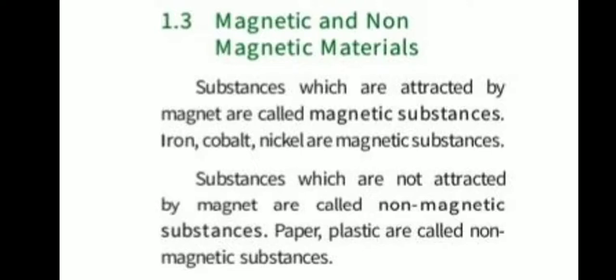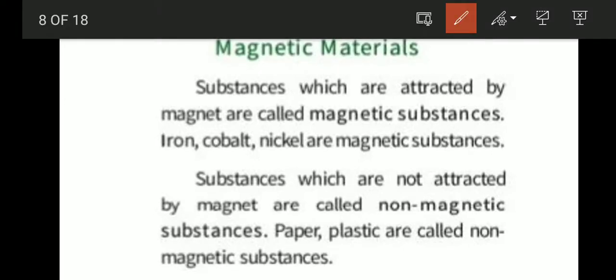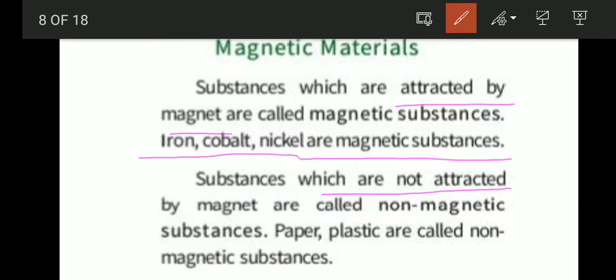Magnetic and non-magnetic materials. Substances which are attracted by magnets are called magnetic substances. Iron, cobalt, and nickel are magnetic substances. Substances which are not attracted by magnets are called non-magnetic substances. Paper and plastic are examples of non-magnetic substances.